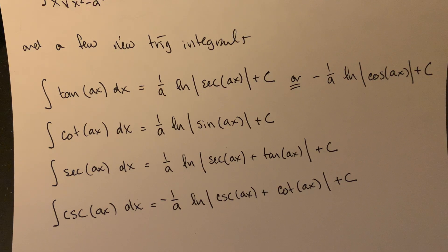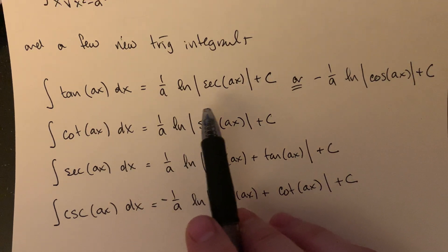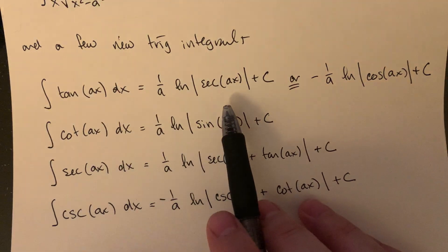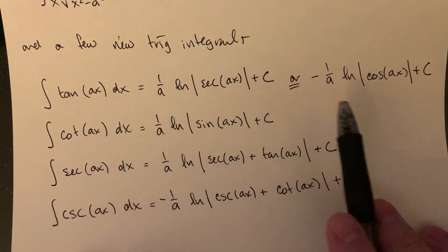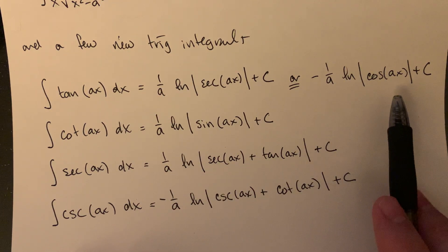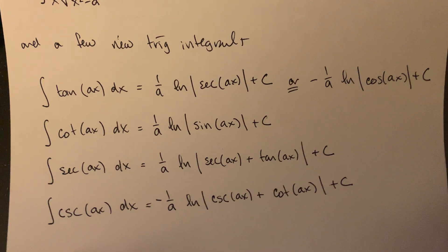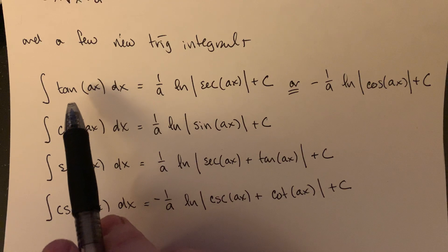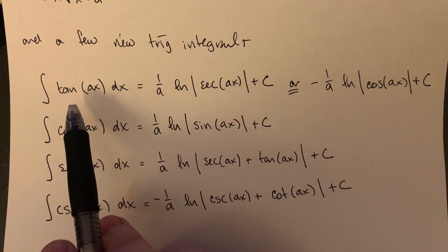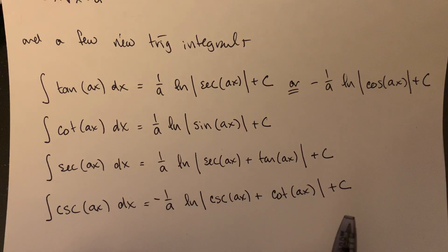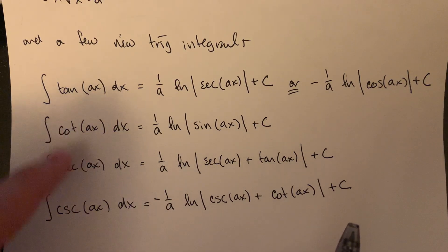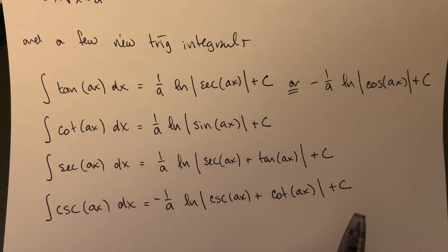Tangent has two different versions. You can get one over a times the natural log of the absolute value of secant of ax — that's the one in the book. But if you use log rules and think of secant as cosine to the negative one, you could also get negative one over a times the natural log of cosine of ax. The setup is remembering that tangent is sine over cosine, so you rewrite it as sine of ax over cosine of ax and do a u-sub picking cosine as your u. You get similar ones for cotangent.